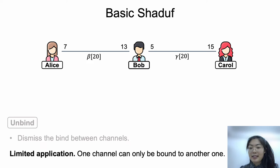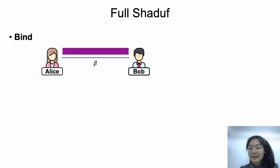While security is preserved in the basic setup structure, its application is limited since one channel could only be bound to another one. For Bob, he may want to shift coins in beta to multiple channels. And for Alice, she also wants to shift coins in beta to her other channels. To relieve these limitations, we propose the full Shadoff to enable one channel to bind multiple channels, taking either user as the intermediate to shift coins. In the basic Shadoff, the maximum amount of coins that could be shifted out of one channel is the channel's capacity. But in the full Shadoff, for each bind, the users specify the upper limit of coins that could be shifted.